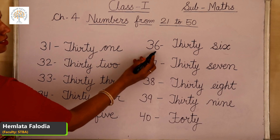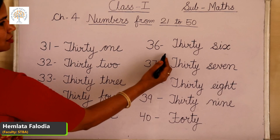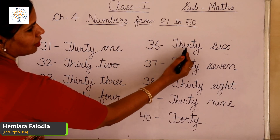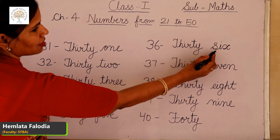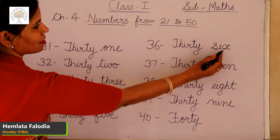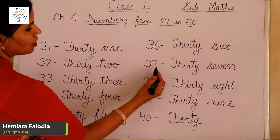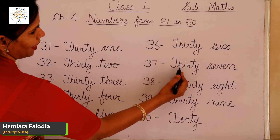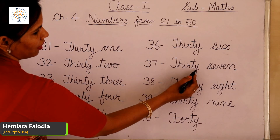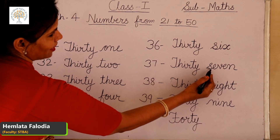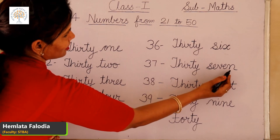Come to the next, 36. 30 plus 6 is 36. T-H-I-R-T-Y, 30, S-I-X, 6. This is 36. Next, 37. T-H-I-R-T-Y, 30, S-E-V-E-N, 7. This is 37.